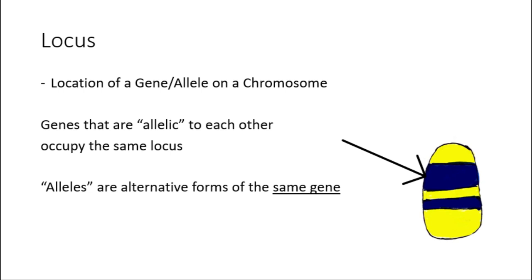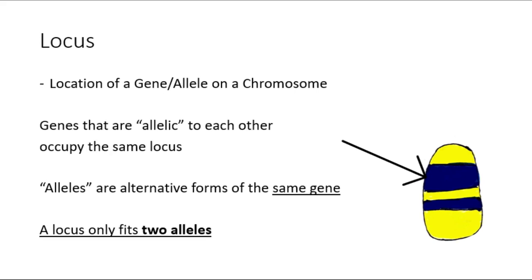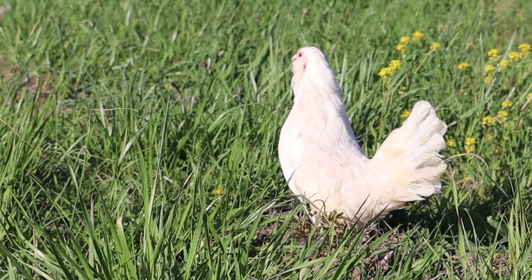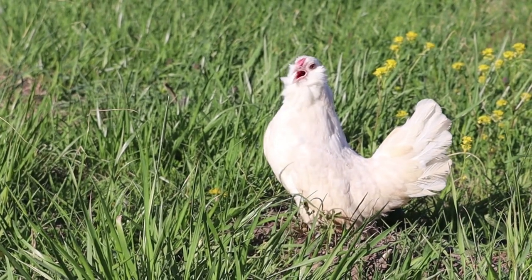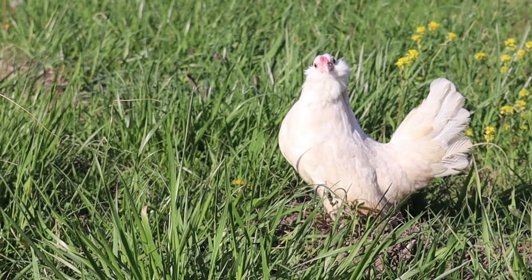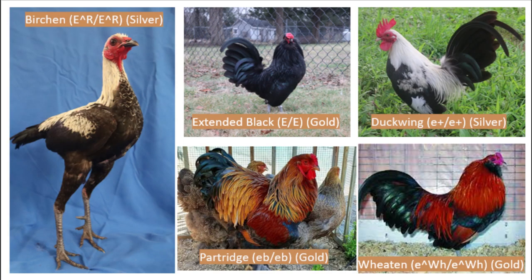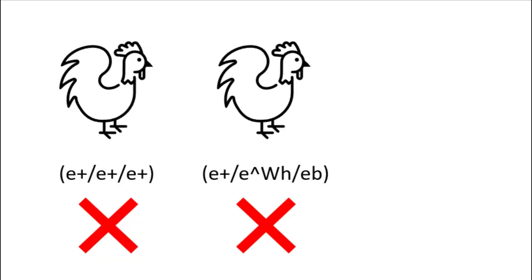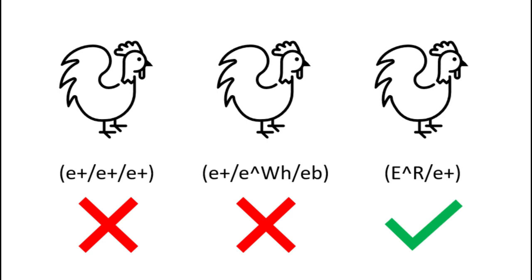When genes are allelic to each other, it means they occupy the same locus. The word allele comes from the same root as the word alternative, meaning alleles are alternative forms of the same gene. A locus only fits two alleles, meaning a bird can only have two alleles at one time at one locus. However, that doesn't mean that there aren't more than two alleles of a gene out there.